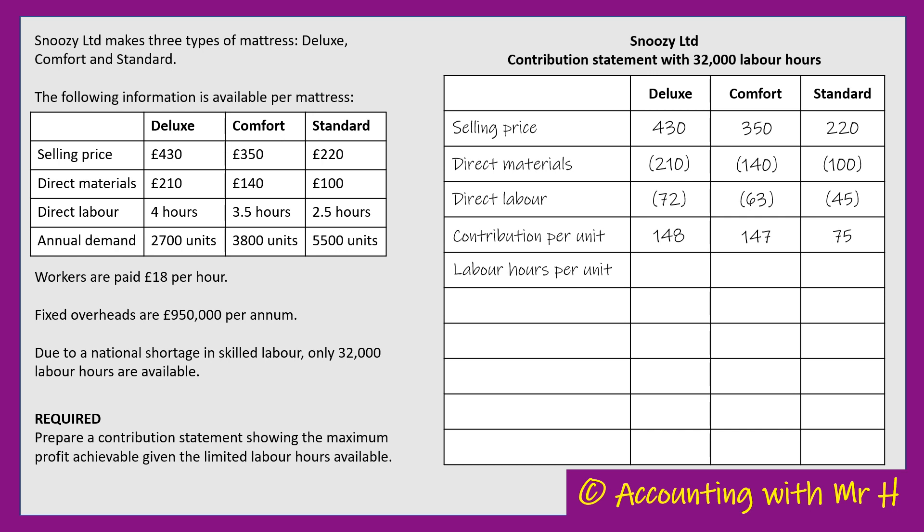The labour hours are the limiting factor, the scarce resource. We know to make a Deluxe it's four hours of labour, a Comfort three and a half and a Standard two and a half. Now I'm going to work out the contribution per labour hour - the contribution per unit of scarce resource. If the thing that was scarce was machine hours it would be contribution per machine hour; if it was metres of material, it would be contribution per metre of material.